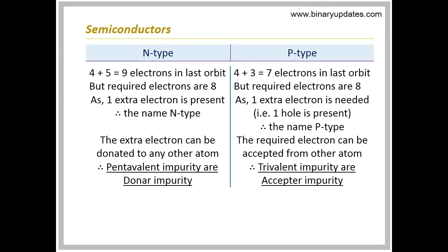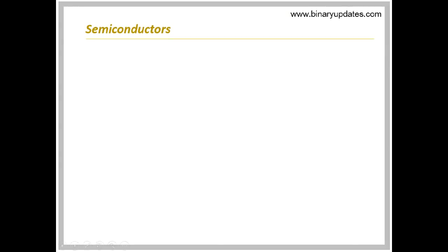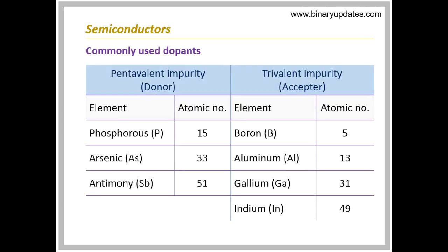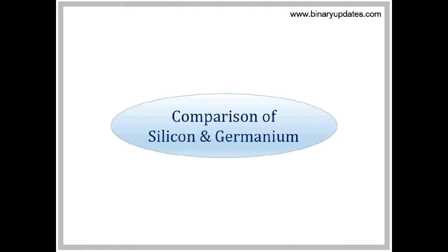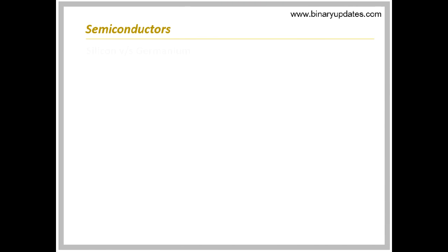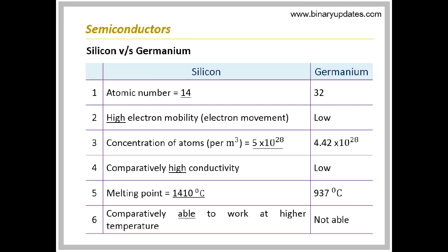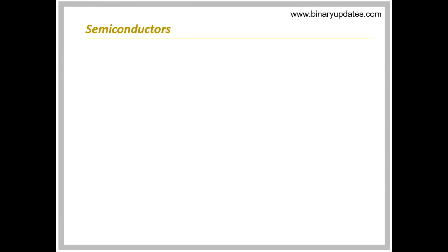Let us see examples of commonly used doping elements. Commonly used dopants are either trivalent or pentavalent, or both are used to increase conductivity. Comparison of silicon and germanium: because of high electron mobility, operating temperature range, and resistivity, silicon is mostly used.